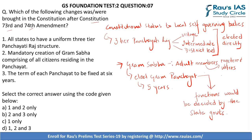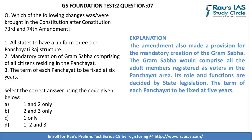The first statement — all states to have a uniform three-tier Panchayati Raj structure — is correct. The second — mandatory creation of Gram Sabha comprising all citizens residing in the Panchayat — is wrong; the Gram Sabha comprises adult members registered as voters, not all citizens. The third — the term of each Panchayat fixed at six years — is wrong; the term is fixed at five years. Hence, the correct answer is C — 1 only. Please have a look at the explanation.